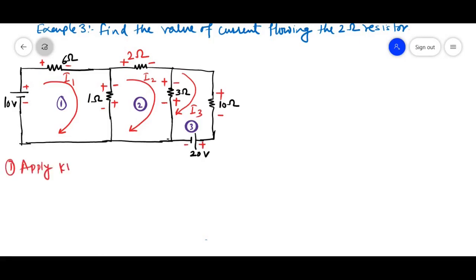Now, apply KVL in mesh 1. So, it is 10 minus 6 I1. If we are writing equation for 1 ohm resistor, current flowing through 1 ohm resistor, we will write I1 minus I2.